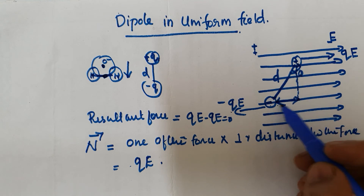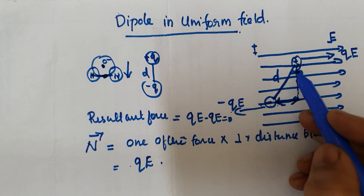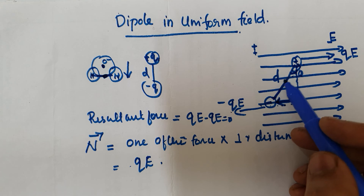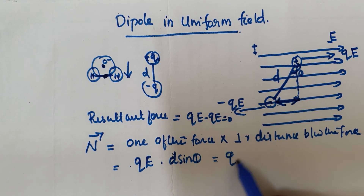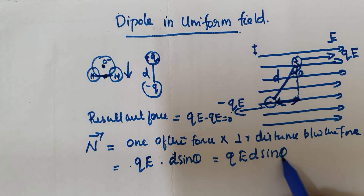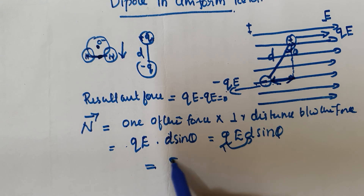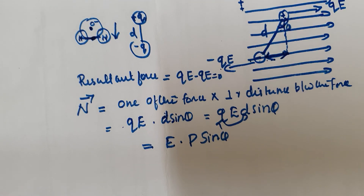The perpendicular distance between the two forces qE is d sin theta, where d is the distance between the positive and negative charges. So the torque is qE multiplied by d sin theta, giving qEd sin theta. Since q times d is the electric dipole moment p, the torque can be written as pE sin theta.